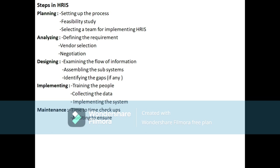Coming to analyzing — this means defining the requirement, vendor selection, and negotiation. Defining the requirement means identifying where we need the HRIS system in our organization — at the base level, middle level, or throughout the whole system. We have to analyze the specific requirement. Then we go for vendor selection through a bidding process — the person who provides the software at the lowest cost is selected. Negotiation means reaching a compromising agreement between the parties to finalize the vendor.